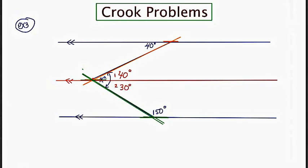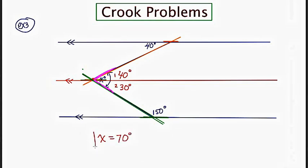We have to remember that angle x is made up of two pieces: a piece marked 40 and a piece marked 30. In class I often give multiple choice — is the answer 40, is it 30, or is it both added together? The answer is x equals 70. It's both angles added together. And look — it's not 110.